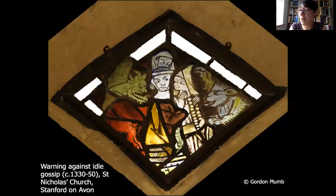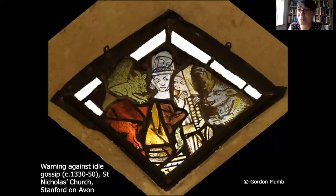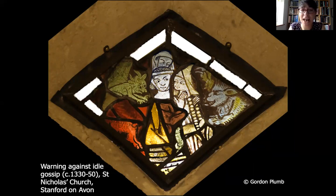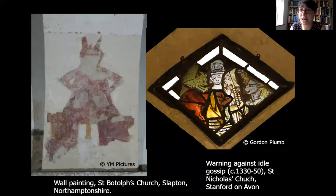There are also windows showing how not to act. This is a really unique panel which survives at Saint Nicholas Church in Stanford - a warning against idle gossip. You will see there are three women at the centre: two actively engaged in gossiping and one listening in from behind, with two devils on either side clearly encouraging them to gossip. This is shown as a bad thing to do, especially at church. Interestingly we see similar scenes in wall painting - on the left you can see the devil bashing two gossiping women's heads together.